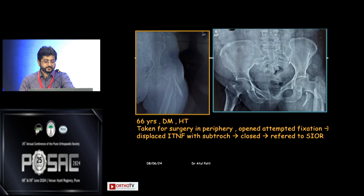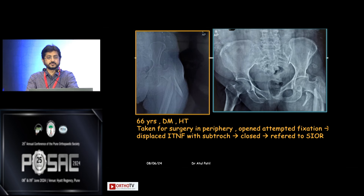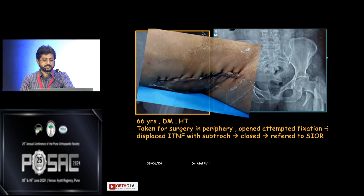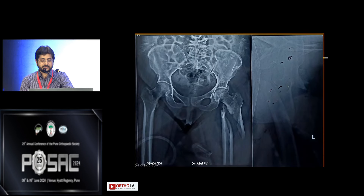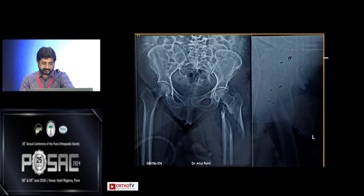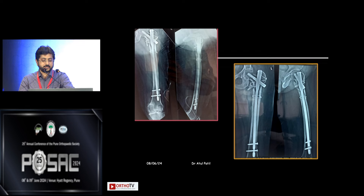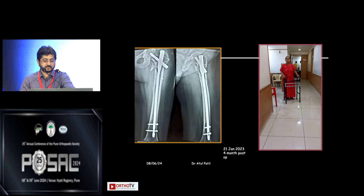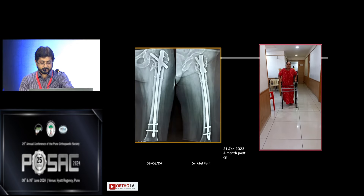A 66-year-old diabetic lady with an IT fracture taken for nailing elsewhere in the periphery. A long spiral subtrochanteric fracture developed and surgery was abandoned due to unavailable implants, converting a simple spiral into a comminuted subtrochanteric fracture. She was transferred in, opened, and fixed with open reduction, proper alignment, a long nail with cerclage wire, lateral wall managed, and subtrochanteric fracture secured with cerclage — with very good healing.